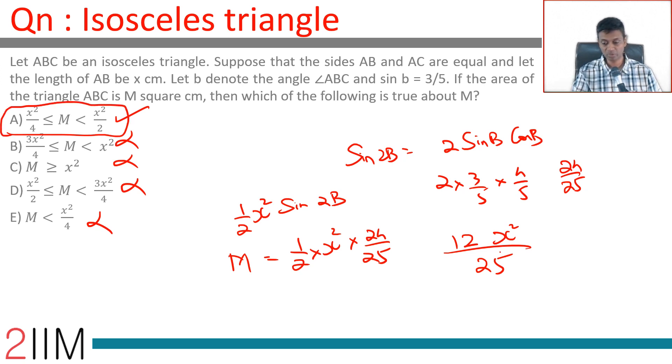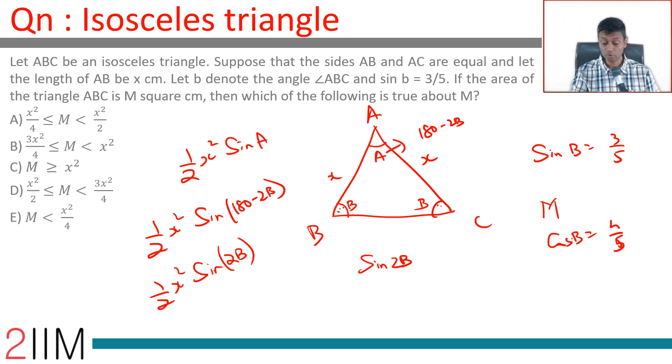We can find the exact value of M. M is 12 X square by 25, slightly less than half X square. That is what we are looking for. And so, again, sin rule. We know area of a triangle is half X square sin A. We know A is 180 minus 2B. We know that sin of 180 minus 2B is sin of 2B. We know sin B. We can find sin 2B. Plug in sin 2B. You are through.